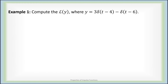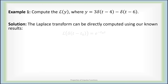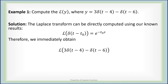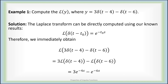As a first example, compute the Laplace transform of y, where y is 3 times an impulse at time 4 minus an impulse at time 6. Using the result that the Laplace transform of an impulse at time t0 is e to the minus t0s, and applying linearity, we immediately get 3 times the quantity e to the minus 4s minus e to the minus 6s.